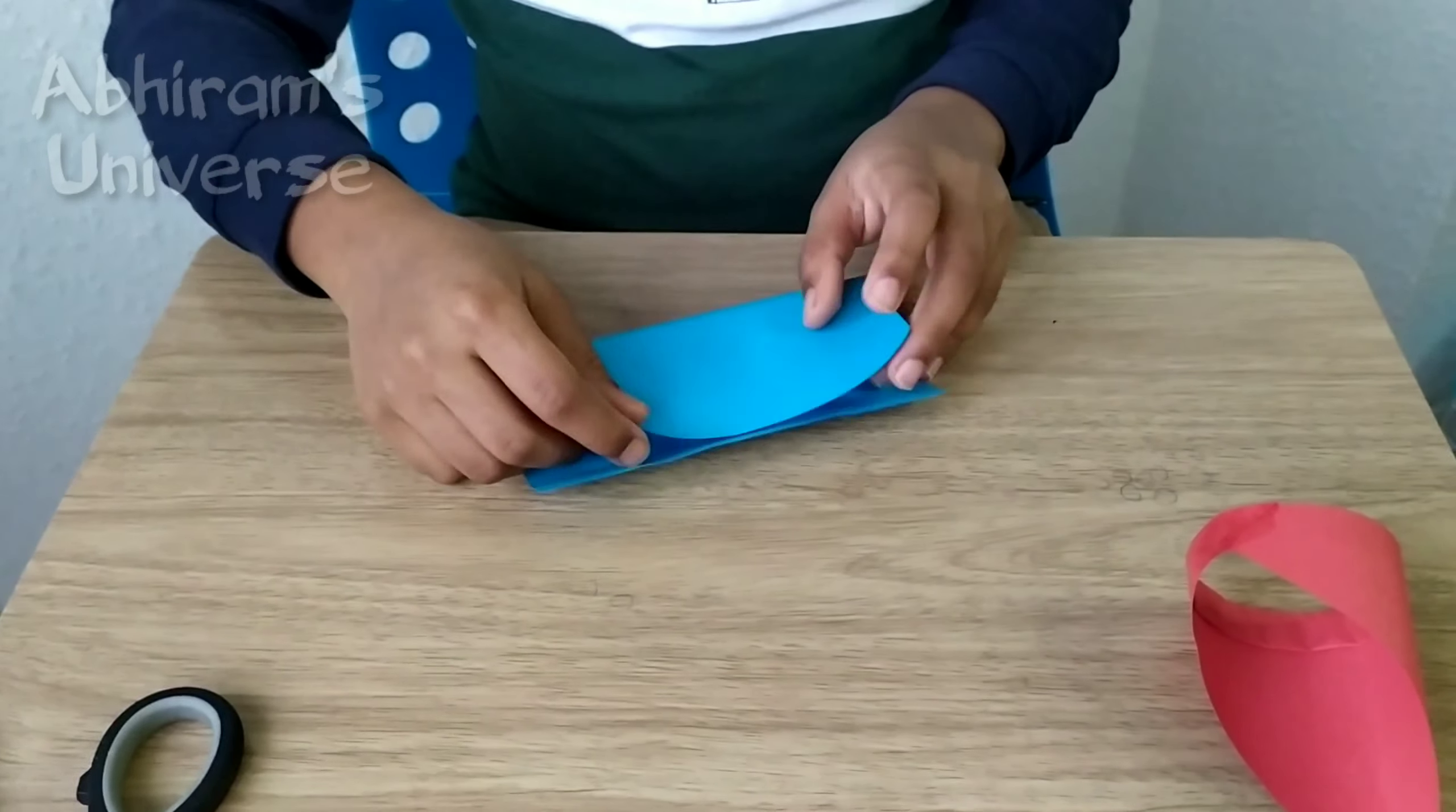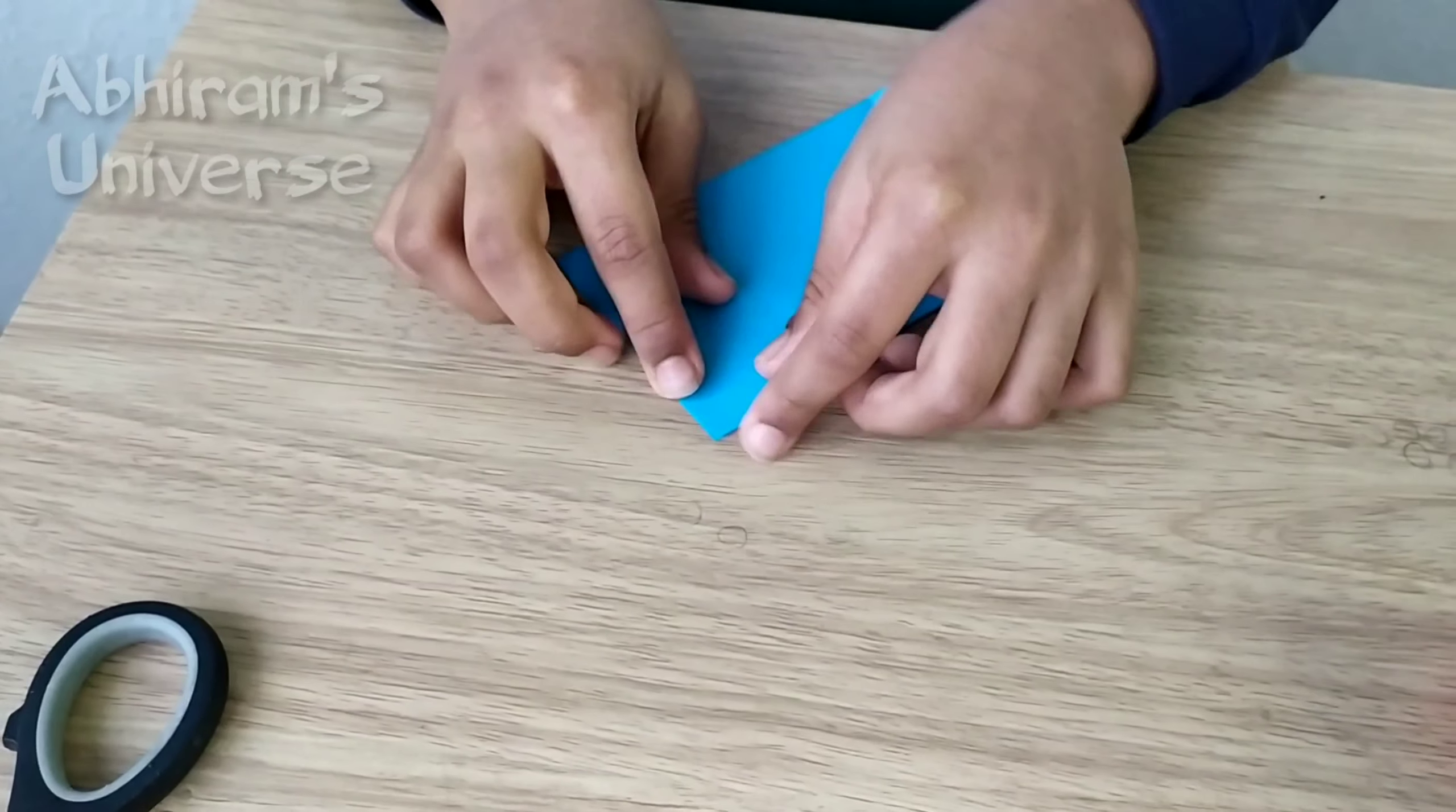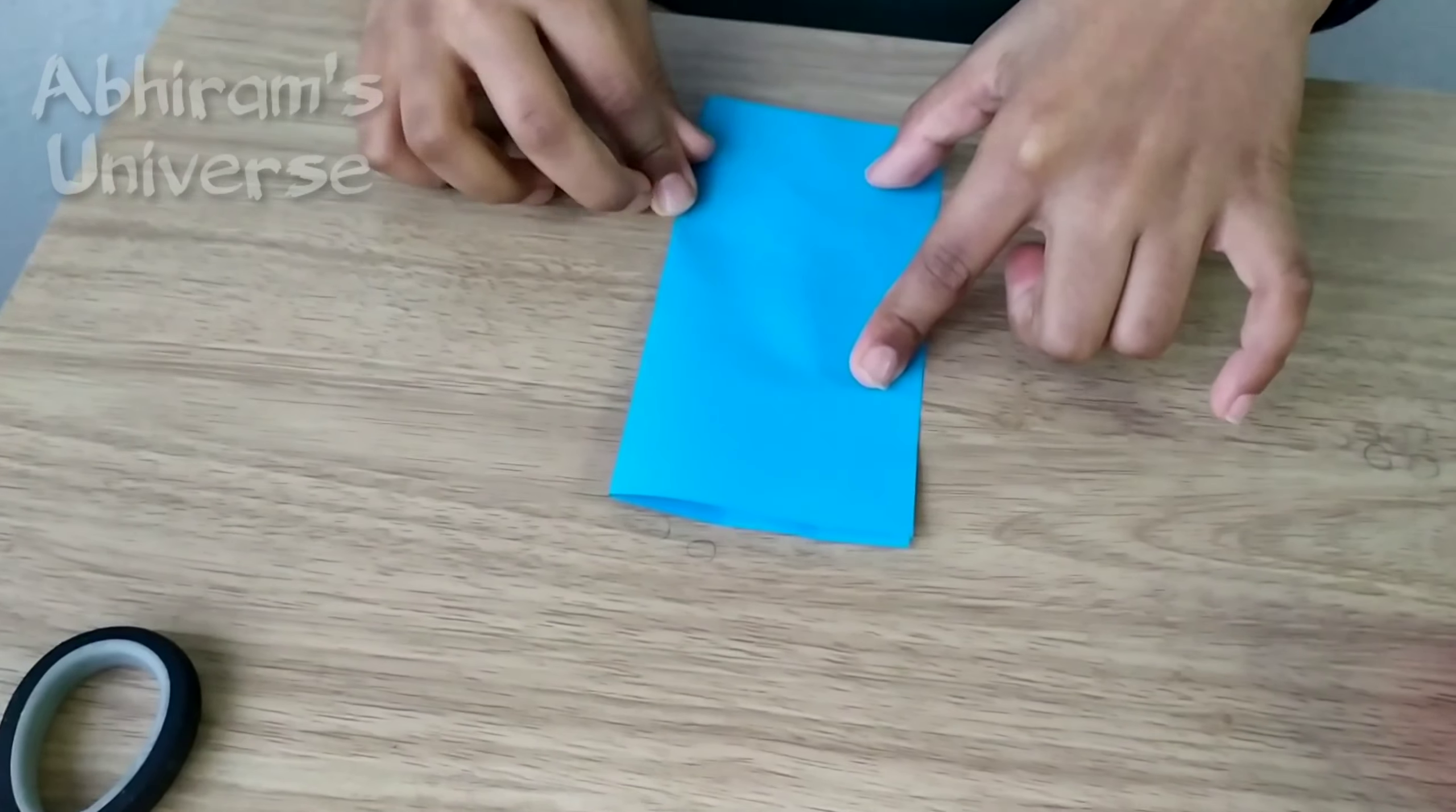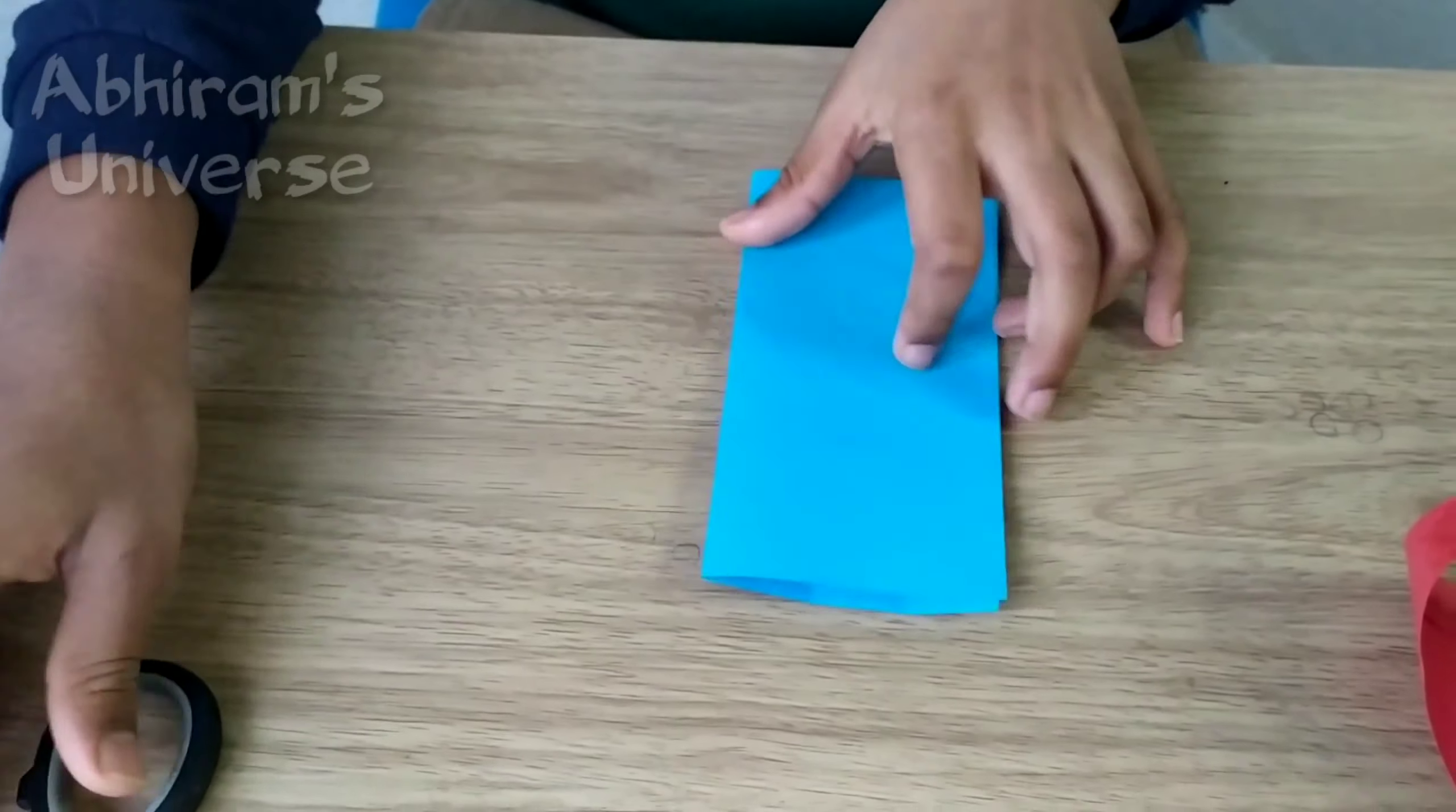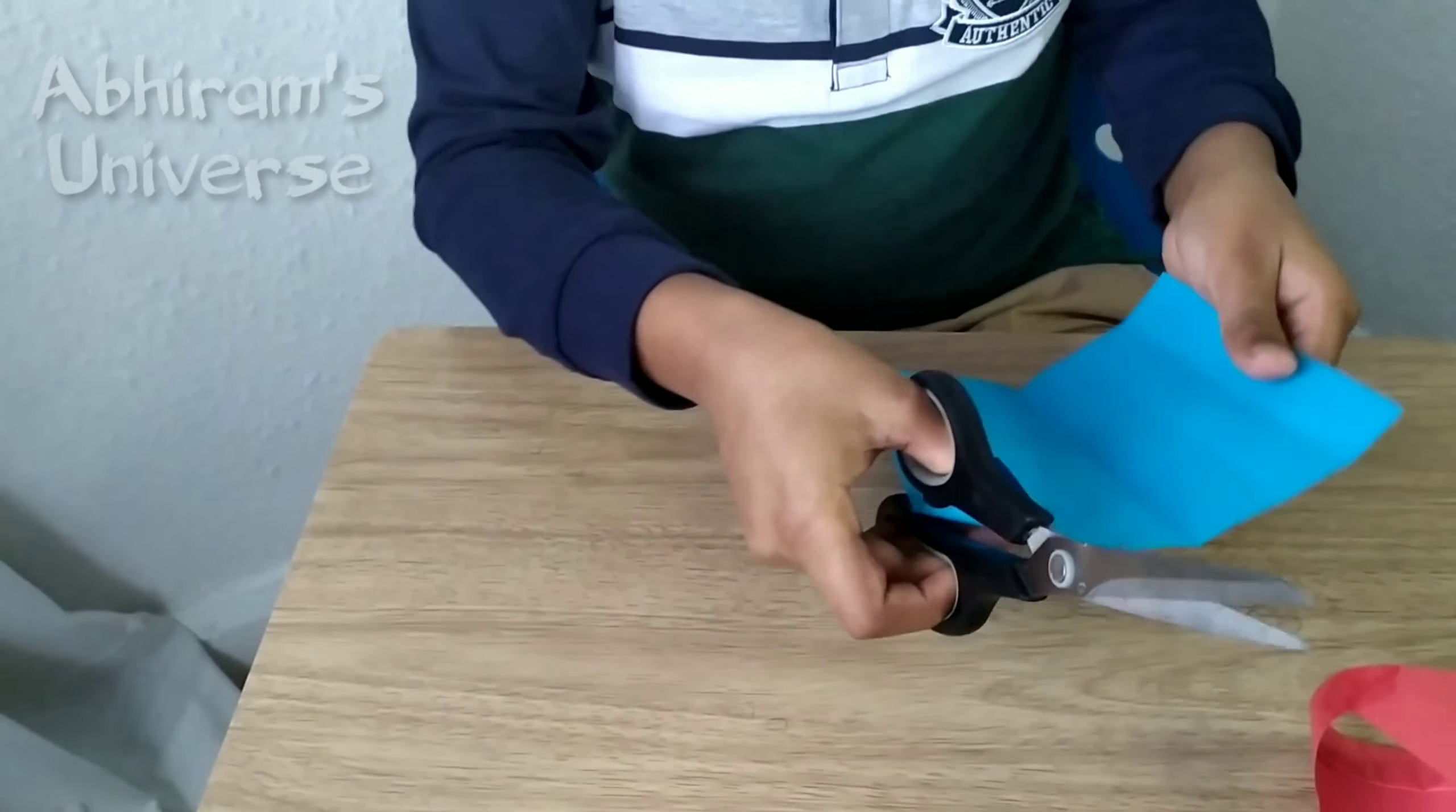So now you will need to fold it in the center. So when you fold it in the center, then take the scissor, take the scissor and cut it in the middle.